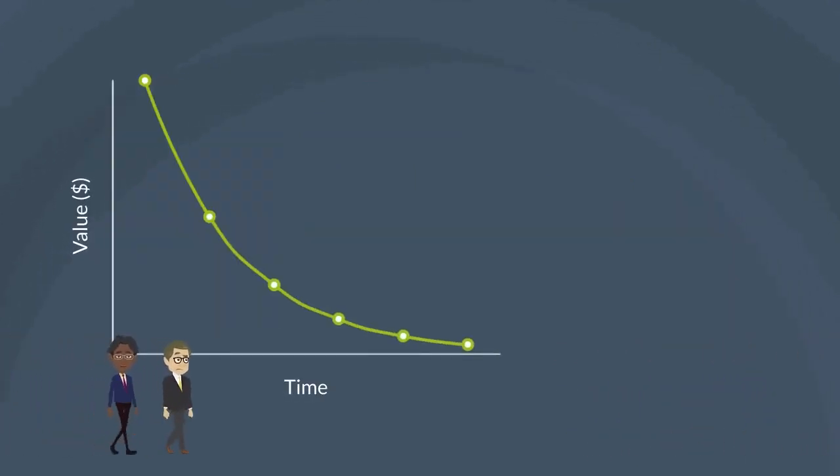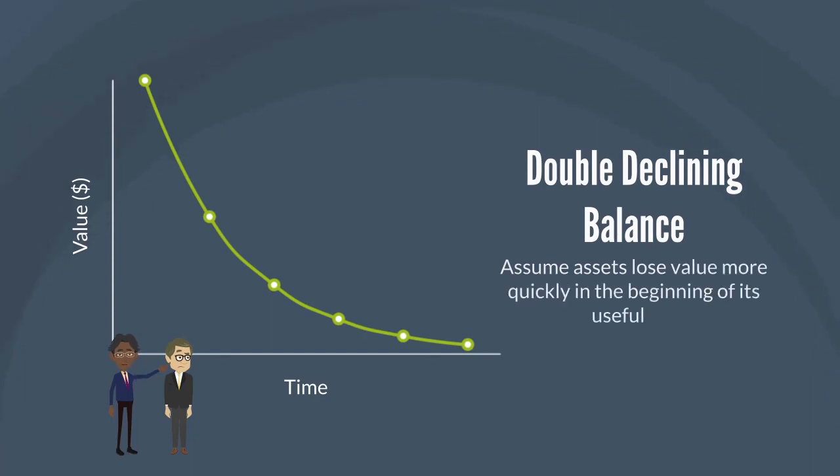The last method is double declining balance, which assumes assets lose value more quickly in the beginning of its useful life. Depreciation expense starts out higher, then goes down over time, reflecting the situation where assets are more useful early on, but whose value declines sharply over time as they become obsolete.